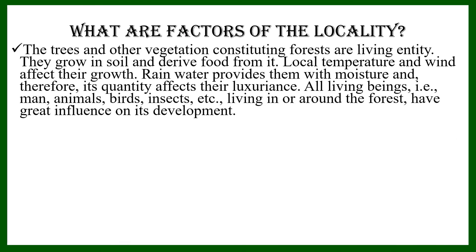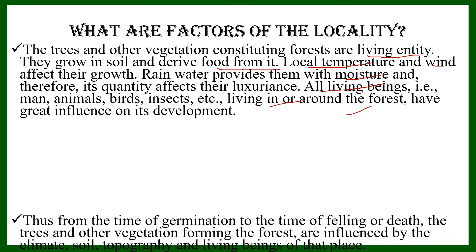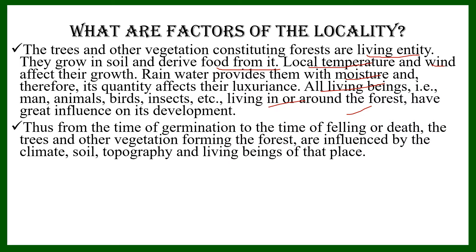So, what are the factors of the locality? As we know, trees and other vegetation present in the forest are living entities. For their growth and development, they need food, which they derive from the soil. The local temperature and wind also influence their growth and development, and rain provides them moisture. All living beings — man, animals, birds, insects, etc. — living in or around the forest will directly or indirectly influence its growth and development. Therefore, from the time of germination to the time of felling, trees and other vegetation forming the forests are influenced by the climate, soil, topography, and the living beings of that place. All these factors are known as the factors of the locality.